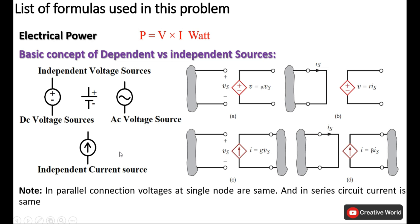Before start solving this problem, I would like to let you know the basic concept of dependent versus independent sources. We will use this formula for power calculation: P equals VI. On the left side I have independent sources — independent voltage sources and independent current sources. These are also referred to as constant voltage and constant current sources.